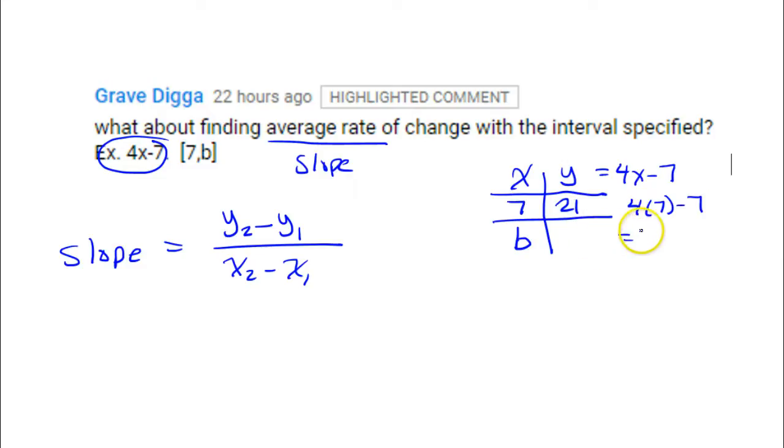And in this case, that would be 4b minus 7. So that's all we can do is put 4b minus 7.